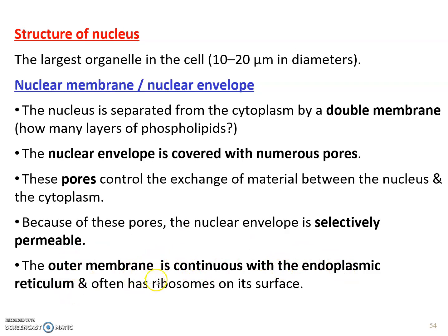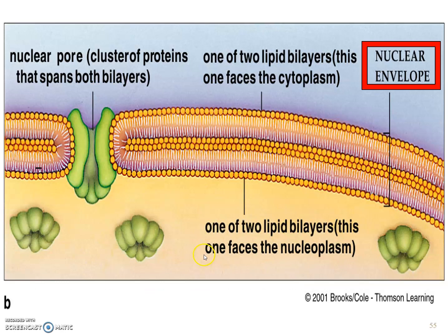The outer membrane often has ribosomes on its surface. The nuclear membrane consists of four layers of phospholipid because of the double membrane. Nuclear pores can be found on the nuclear envelope.